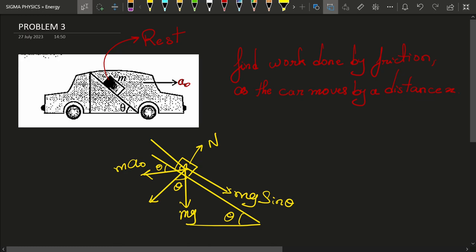That means I will get m a0 cos theta over here, and there will obviously be friction in the backward direction, fr.